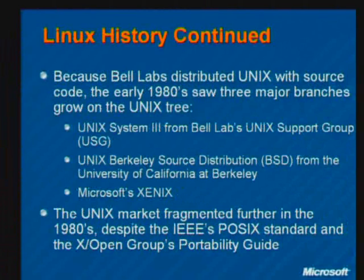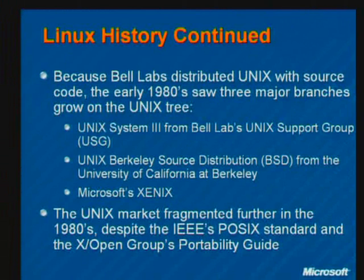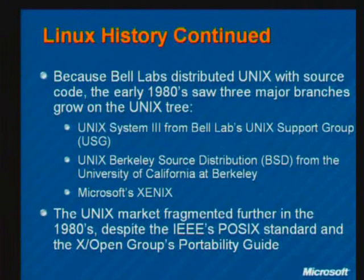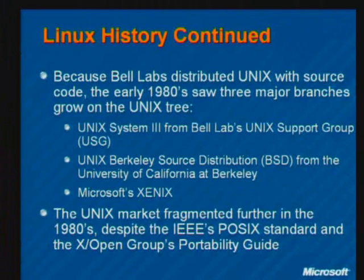Because the source code was proliferated and people could license it, you saw three major branches of the Unix tree develop as companies started to add their own features and capabilities. Those three branches were Unix System 3 from Bell Labs' own Unix support group, another version called Unix BSD from the University of California at Berkeley, and finally — believe it or not — Microsoft's own version of Unix, which was called Xenix. And if you're surprised that Microsoft had its own version of Unix, you might be even more surprised to know that in the early 1980s the biggest Unix vendor in terms of units deployed around the world was Microsoft.